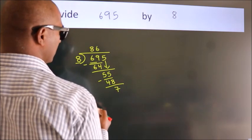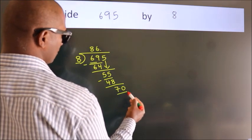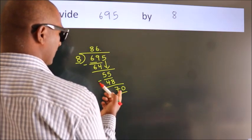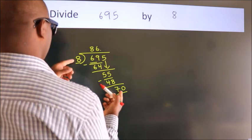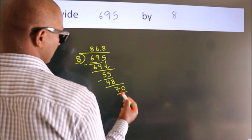So what we do is we put a dot and take 0, so 70. A number close to 70 in the 8 table is 8 times 8 equals 64.